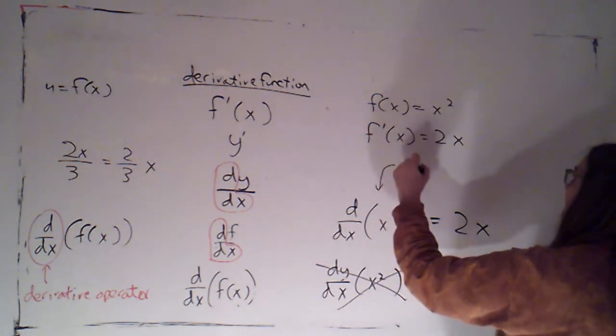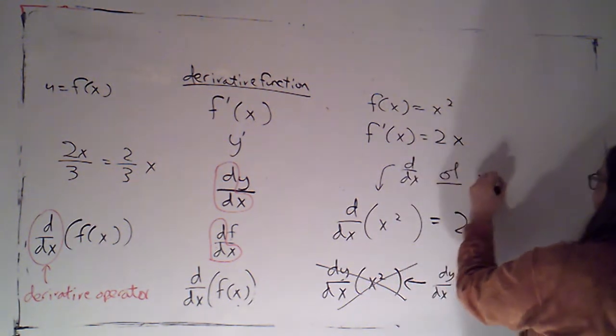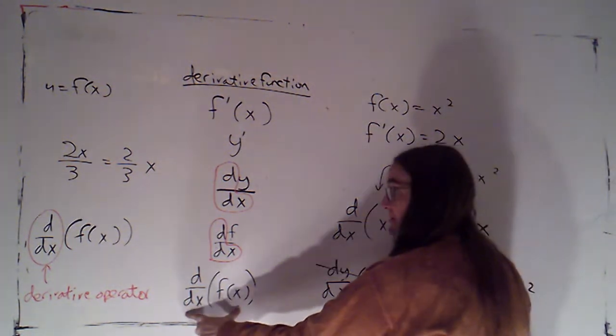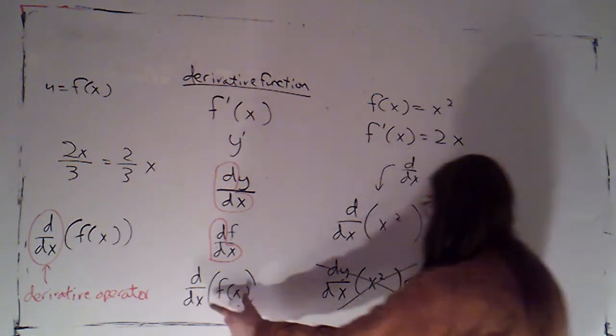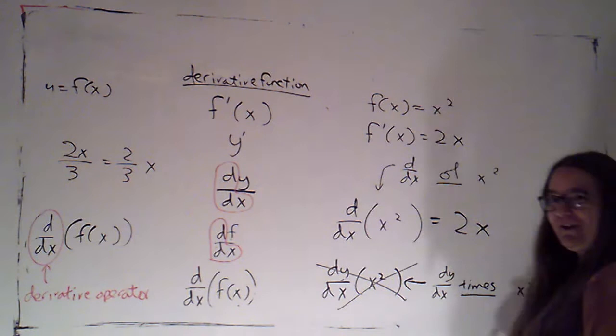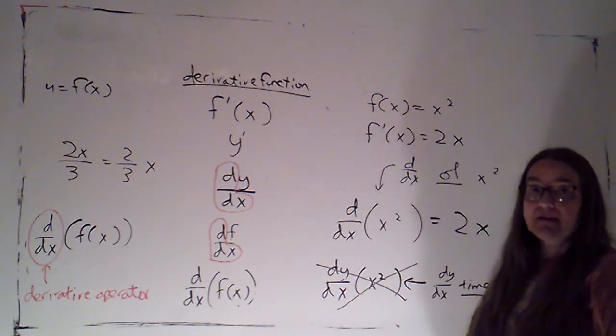This means dy by dx, the derivative of x squared. So do be careful if you are using this notation that the function, which you can indicate either by its name or by its formula, but the function you're taking the derivative of is the first thing you see after that d on the top.